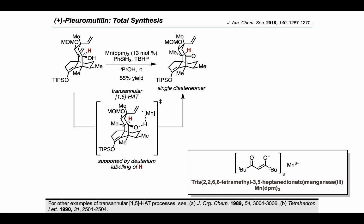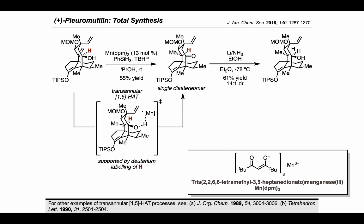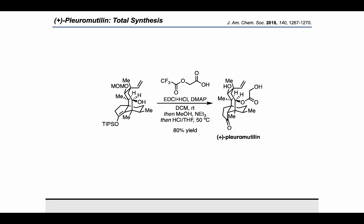That product could be treated with lithium in ammonia to regenerate the secondary alcohol with the same stereochemistry as before and with high diastereoselectivity. Finally, they carried out a coupling reaction with a protected alpha-hydroxycarboxylic acid followed by a global deprotection sequence, which provided plurimutalin.